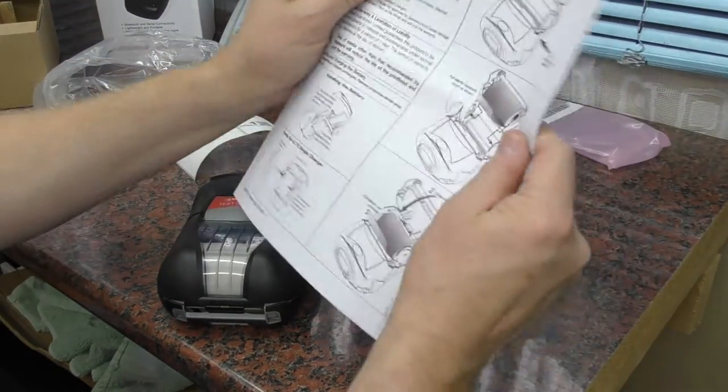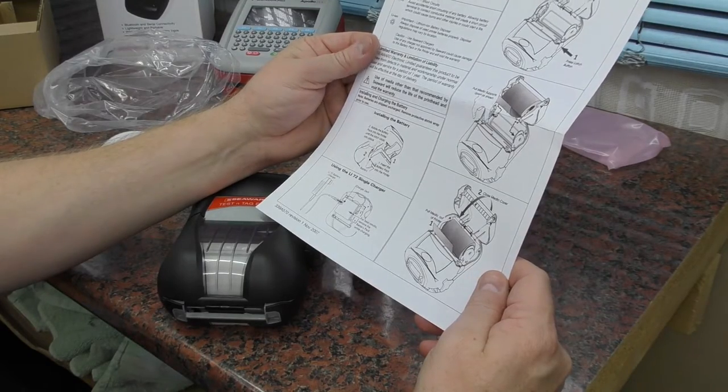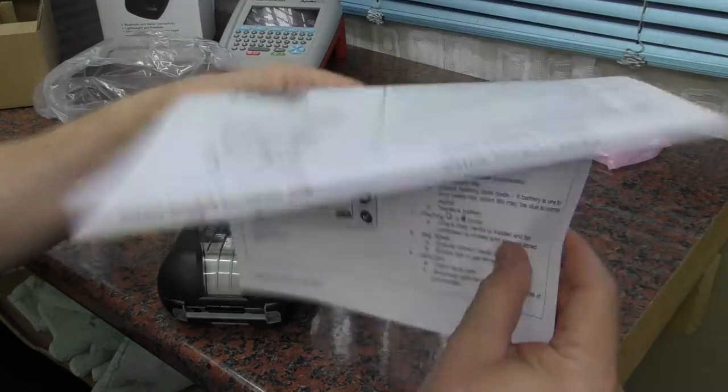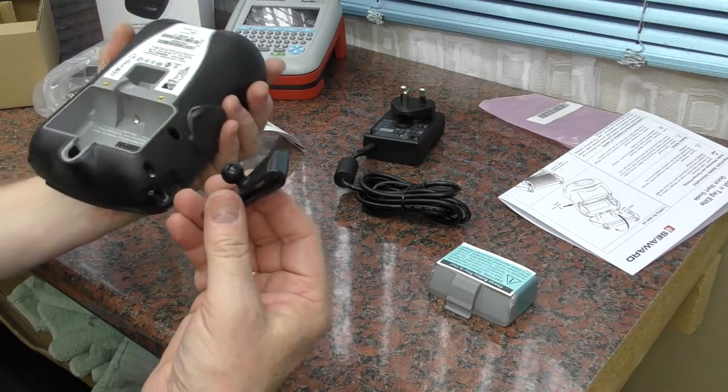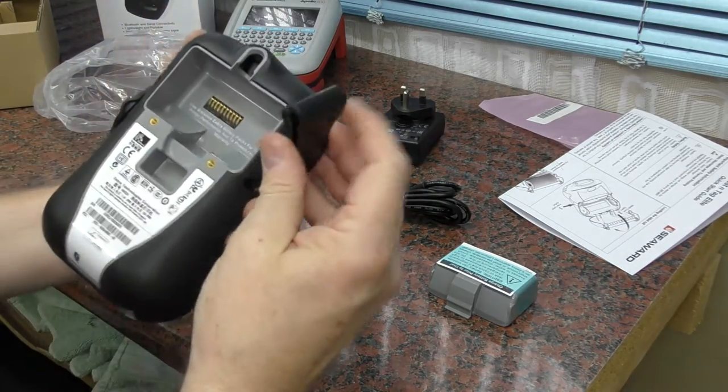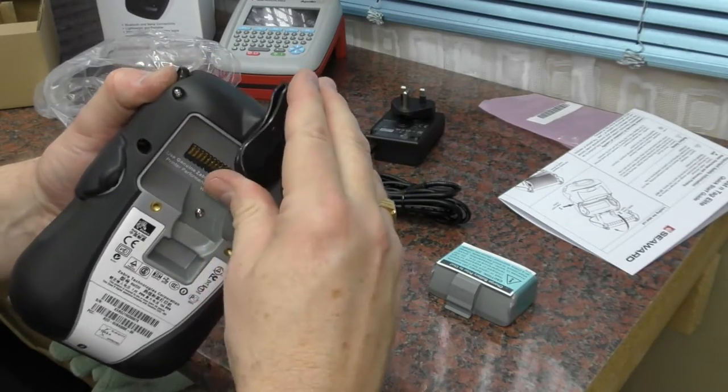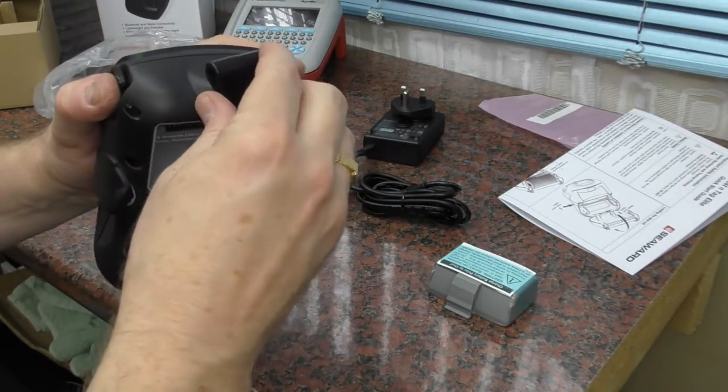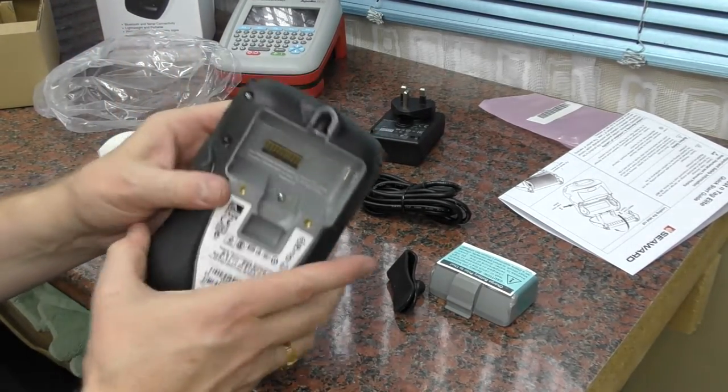Let's have a quick look at the instructions. Yeah, I'm not entirely sure what that is for. Ah, I think that will go in here. And it is a belt clip. So you can actually sling that onto your belt or something else to carry it around.